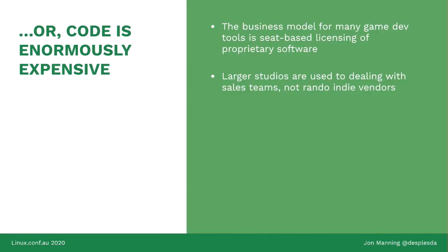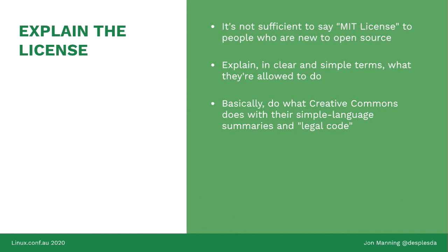The other common way people get software in the game dev scene is seat-based subscription model licensing of proprietary code. People generally want to make money selling their code, and a popular way is to sell licenses — Photoshop, Unity, Houdini; most professional asset and content generation tools are delivered this way. What that means is it's not sufficient to just say 'MIT license' to people who are brand new to open source. It's important to explain in fairly clear and simple terms what people can and can't do.